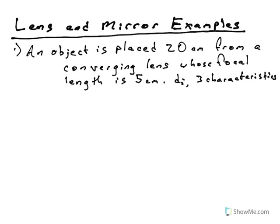We have a converging lens with the principal axis. I'll place the focal point at five centimeters — for a lens, you put one on each side. Then we put our object that's 20 centimeters away. So this is 5, 10, 15, and here's about 20. There's our object.